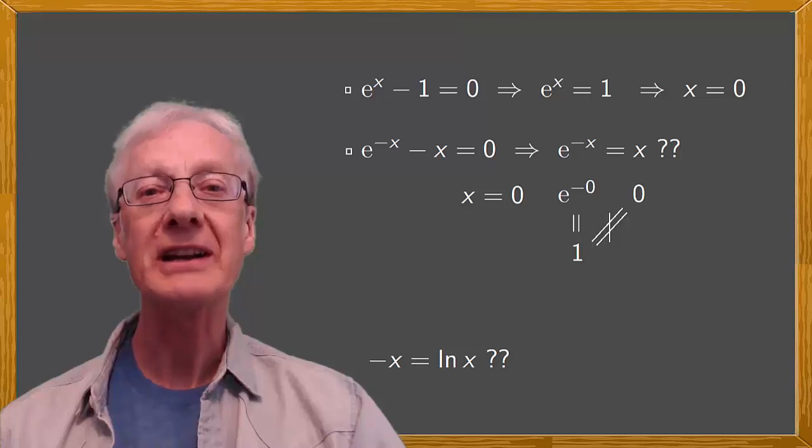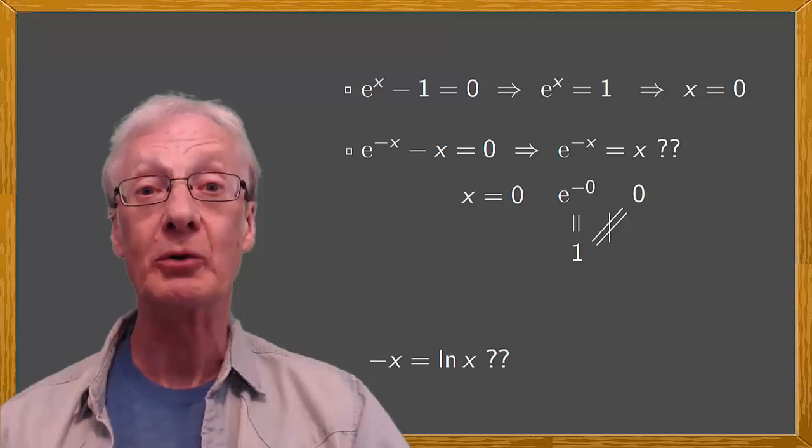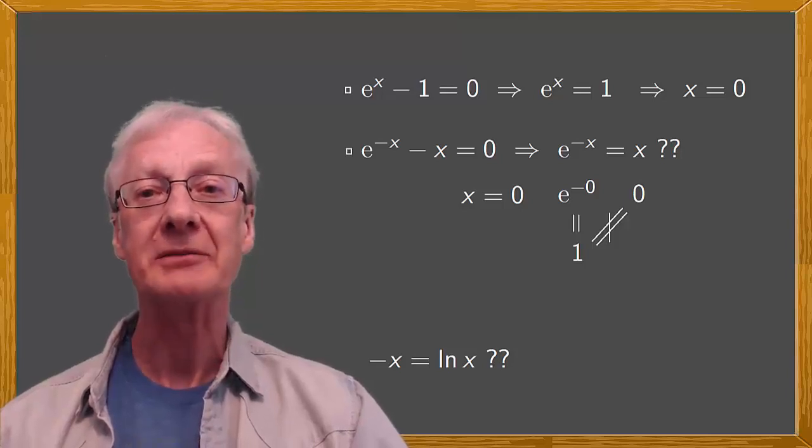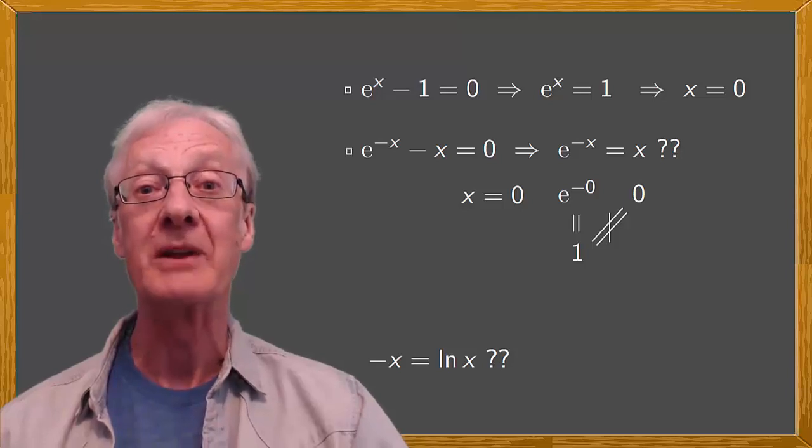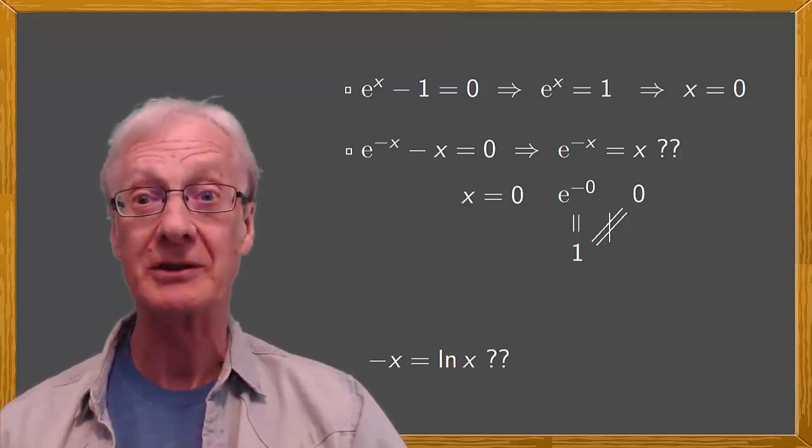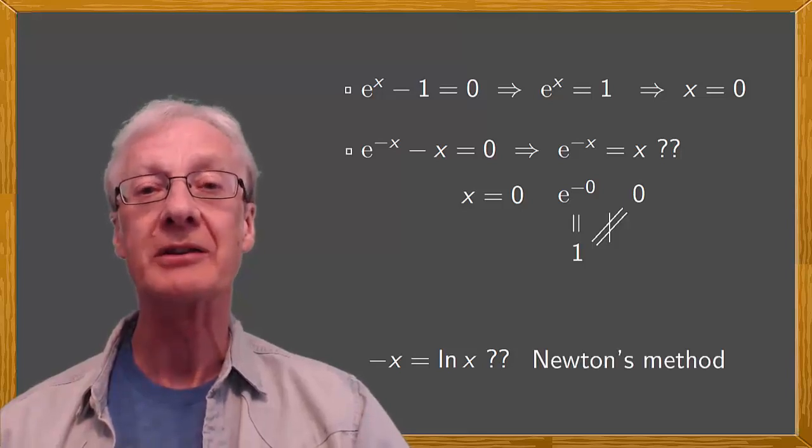If we can't find exact solutions of an equation, then at least we can try to get approximate ones. It's much better to be able to say the solution is close to such and such a value than to say we've no idea at all. So let's look at how we can use Newton's method to find approximate solutions.